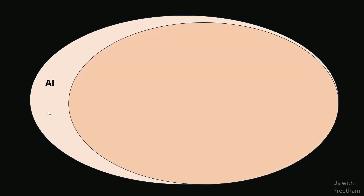Now, overall, artificial intelligence is the outer circle. Inside that is the machine learning part, and inside that is the deep learning part. This is the AI reference — overall AI in the circle, and that is machine learning. We are using machine learning as a basic AI engineering step.